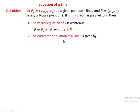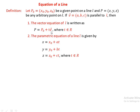The parametric equation of a line L is given by: x equals x-naught plus a·t, y equals y-naught plus b·t, and z equals z-naught plus c·t, where t is a real number. This is the parametric form. The vector form of the equation for line L is r equals P-naught plus t·V.